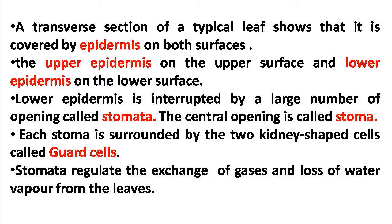In the transverse section of a leaf, the upper epidermis is a single layer arranged horizontally with no intercellular space. The lower epidermis similarly forms a boundary layer. The lower epidermis has small pores called stomata.